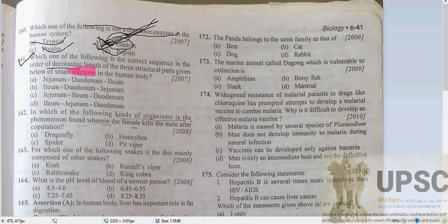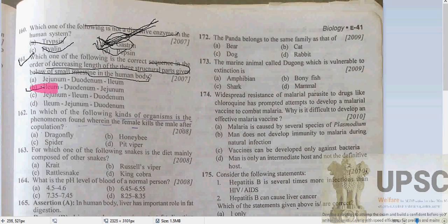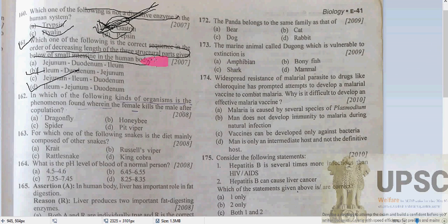Now question 161: which one of the following is the correct decreasing length sequence of the three structural parts of the small intestine in the human body? The three parts are ileum, jejunum, and duodenum. In decreasing order of length: ileum is the longest, then jejunum, then duodenum. So option D — duodenum, ileum, jejunum — wait, the correct decreasing order is ileum, jejunum, duodenum. So D will be the correct answer.